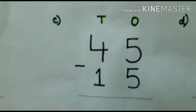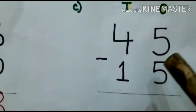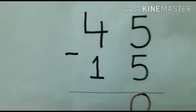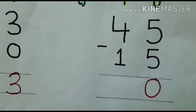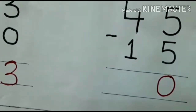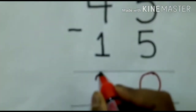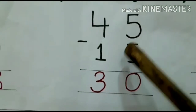Coming to question C: I have 45 and 15, that means I have to subtract 15 from 45. In ones place I have 5 and 5. In subtraction fact we have learned that if we subtract 2 same numbers the answer will be 0. And in tens place I have 4 and 1. If we subtract 1 from any number we will get the previous number, so 4 minus 1 is 3. If we subtract 15 from 45, my answer is 30.